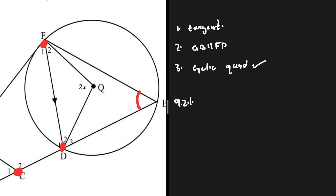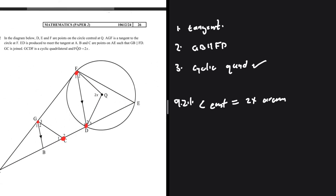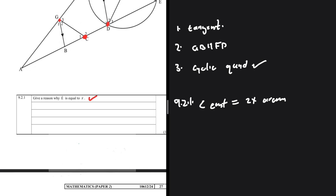Why is angle E equals x? It is because angle Q equals 2x, and the angle at the center is twice that at the circumference. So because Q is 2x, E should be equals to x. That's relatively easy to see — that's our reason why E equals x.